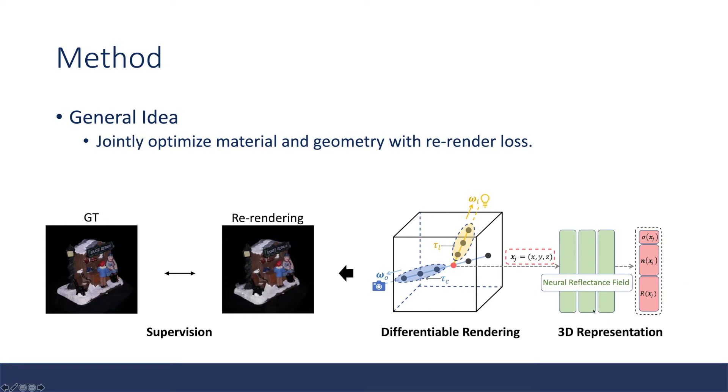The first thing is the corresponding 3D scene representation, which in this paper is neural reflectance field. Then we need to know how we can differentially render this neural reflectance field into an image. And the third part is how we can supervise this model to optimize for a neural reflectance field.